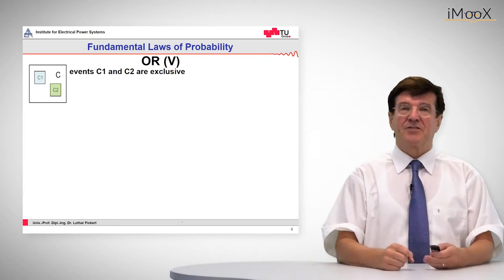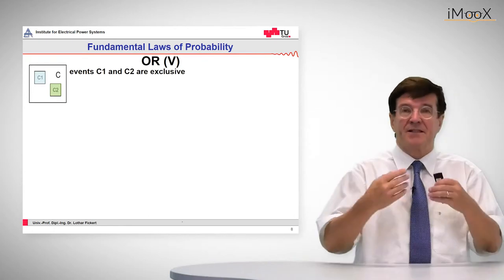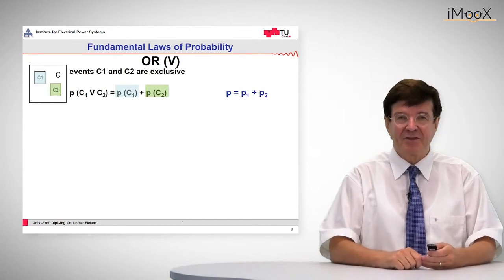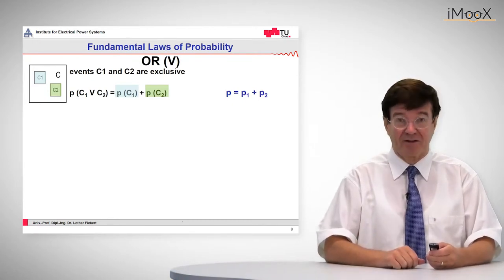In contrast to this we have the OR condition. That means if something happens or the other happens, then it is counted as one event. If these are exclusive, the sum of the two probabilities gives the OR event.